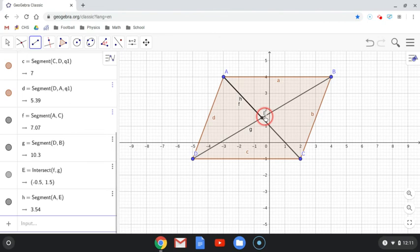When I do that, you'll notice that it pops up on the bottom. So, A to E, that segment would be 3.54 units long.